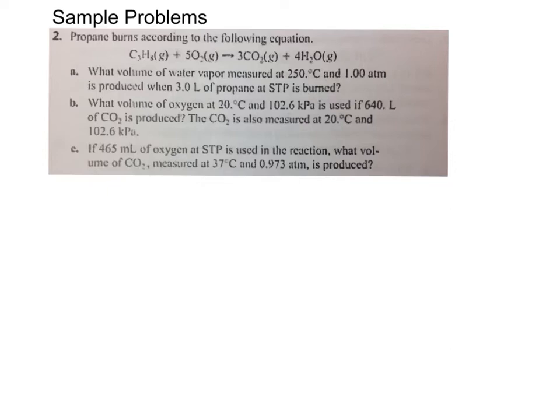Let's work out each of the three parts of the problem and we'll talk you through it. Mr. Hunter, let's get started. So it says propane burns according to the following equation. It's propane plus five oxygen yields three CO2s and four waters. So they first want to know what volume of water vapor measured at 250 degrees Celsius and one atmosphere is produced when three liters of propane at STP is burned.